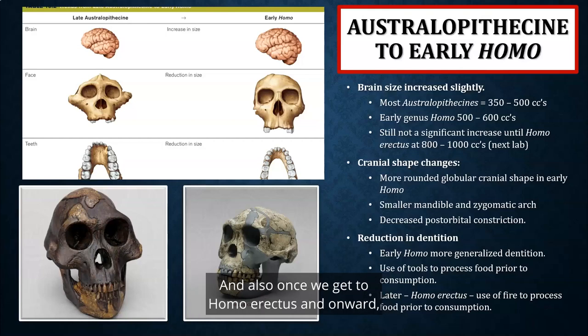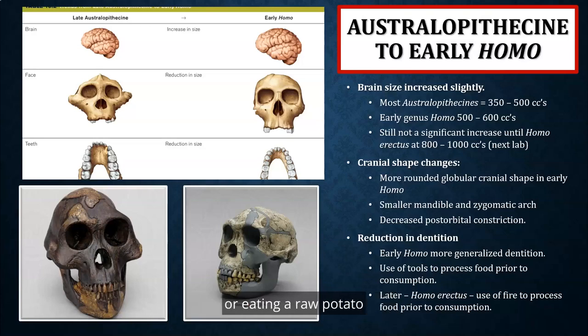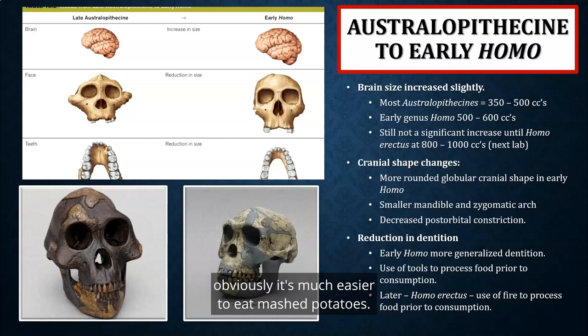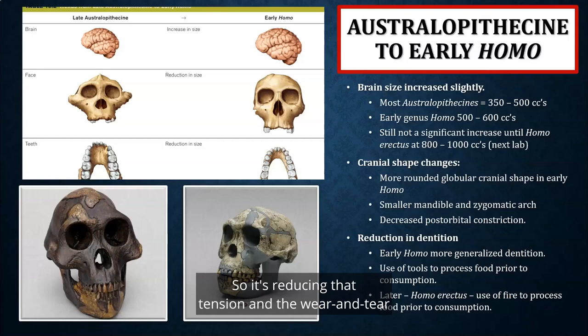When we see genus Homo — Homo habilis and onward — they're utilizing more stone tool technologies, processing their food prior to consumption, which reduces demand on the chewing muscles. Also, once we get to Homo erectus and onward, we have the likely control of fire. Eating cooked food versus raw food is obviously much easier, so tool use and fire reduced tension and wear on the dentition and jaw. You don't see features like a sagittal crest in genus Homo.